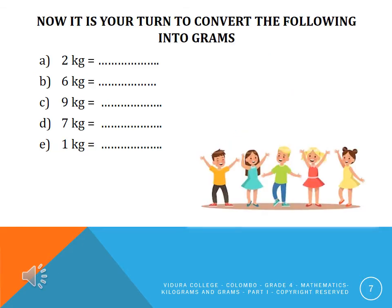Now it's your turn to convert the following into grams: A, two kilograms; B, six kilograms; C, nine kilograms; D, seven kilograms; and E, one kilogram.